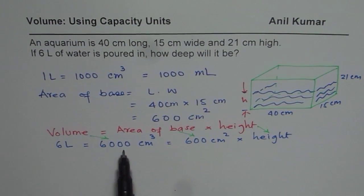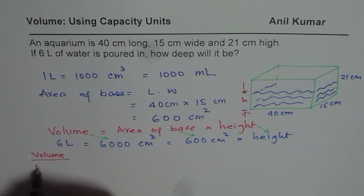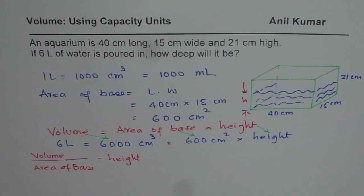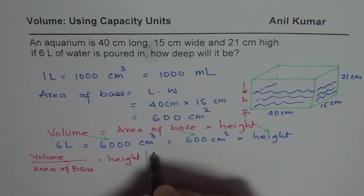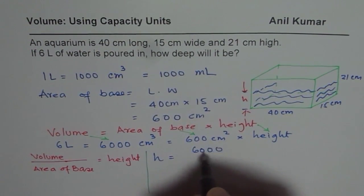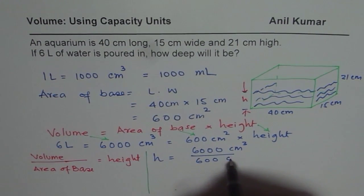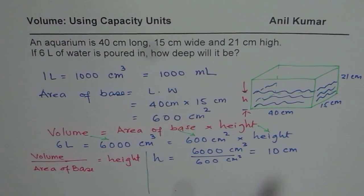If we divide the volume by the area of the base, we get height. We are dividing volume by area of base to get height. Volume is 6000, so height equals 6000 centimeter cube divided by 600 centimeter square, and you get 10 centimeters. So the depth of the water is 10 centimeters.